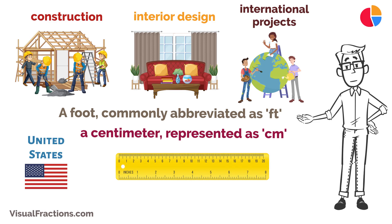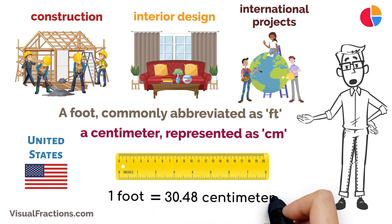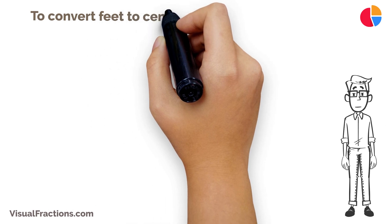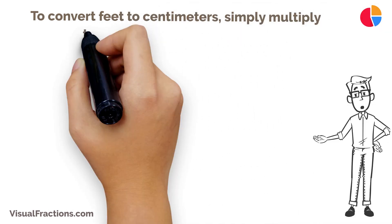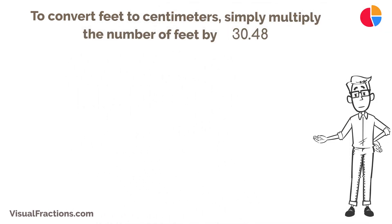Now, here's the key part. One foot is equal to 30.48 centimeters. To convert feet to centimeters, simply multiply the number of feet by 30.48.